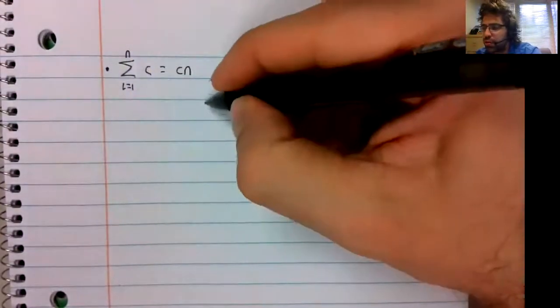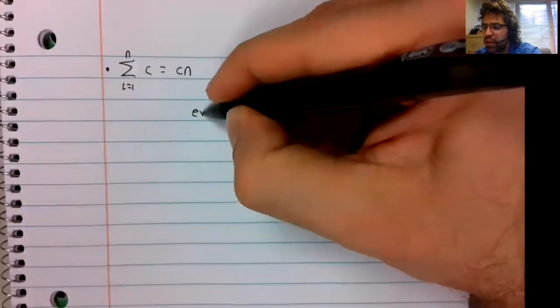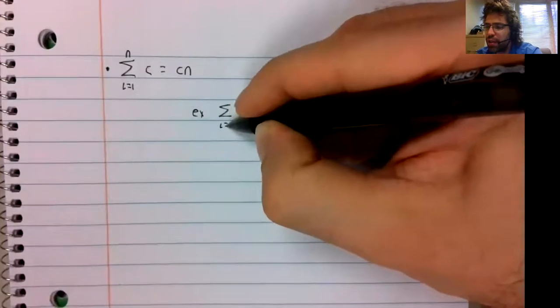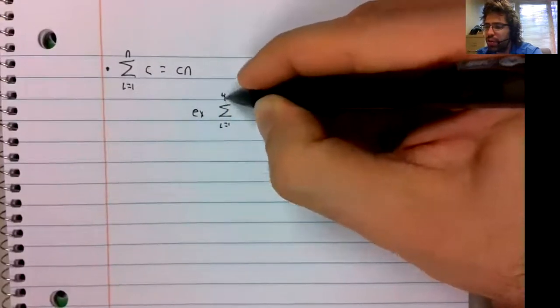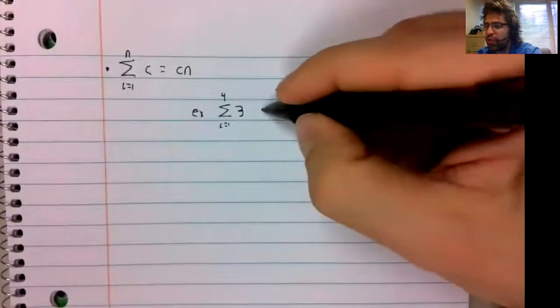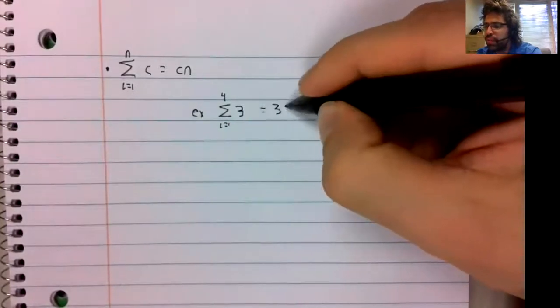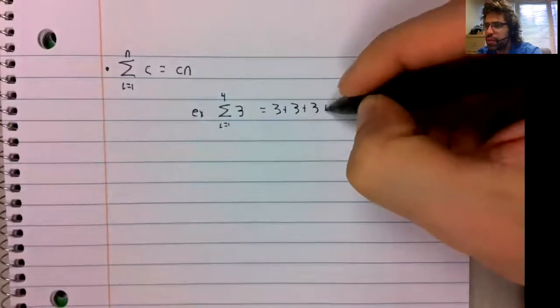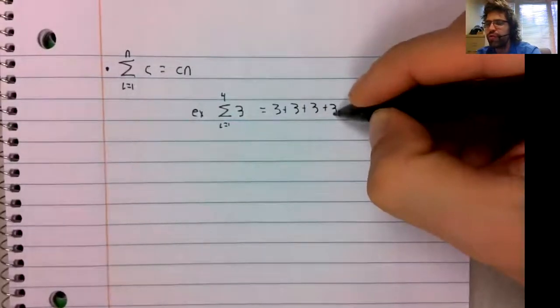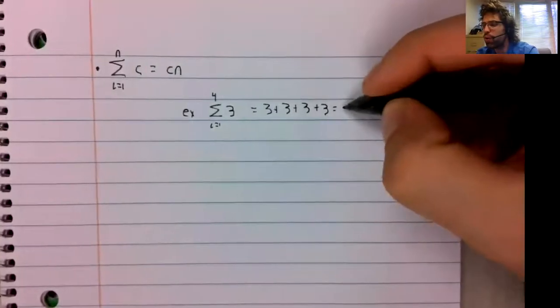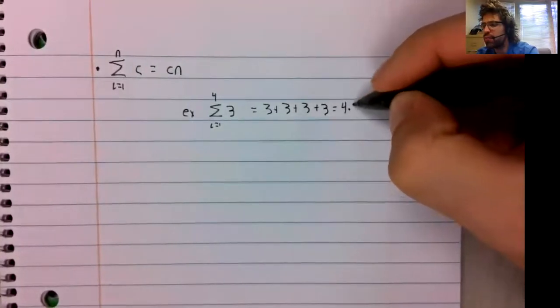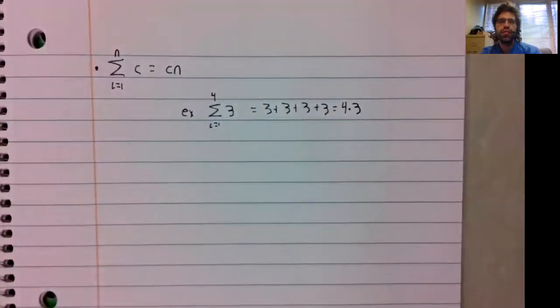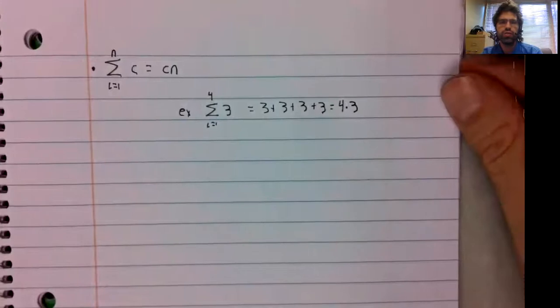So, for example, the sum from i equals one to four of three is three plus itself four times, which is indeed four times three.